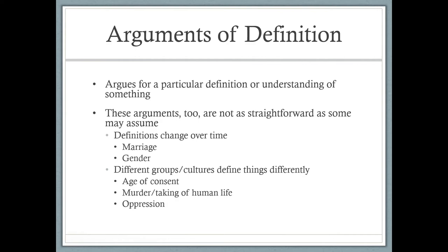Definitions change over time. Think about the definition of marriage. A hundred years ago, most everyone in the world would have said marriage is between a man and a woman. But look at today — marriage is defined completely differently. Marriage can be between a man and a woman, but it can also be between a woman and a woman or a man and a man in most jurisdictions. And on the issue of gender itself: 50 or 20 years ago, gender was male or female. But today, look at how many genders are recognized. So definitions change over time, and making an argument of definition can be difficult because of that.